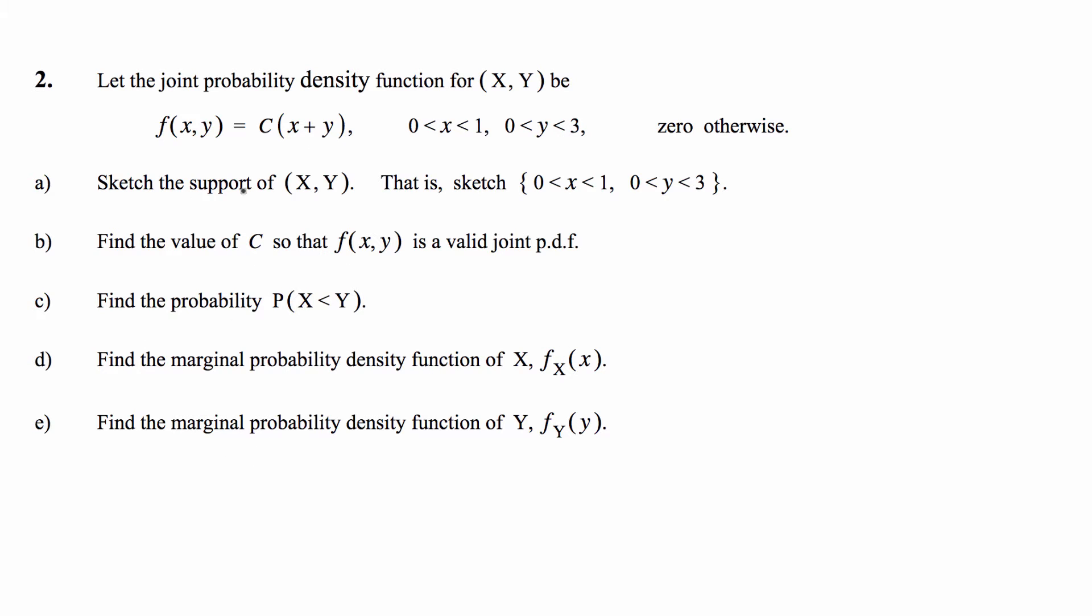This problem has the additional part of A and B where we also are going to find the support and the constant C for this function. Let's go ahead and get started. A says sketch the support of X and Y. This just tells you where you're going to have your limits. Basically, where does this probability density function exist in 2D space? This is going to become relevant for C and then D and E.